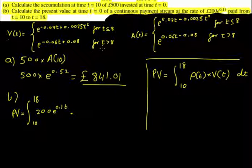so between 18 and 10, we're using this bit of v of t over here, so we're saying e to the negative 0.06t plus 0.08.